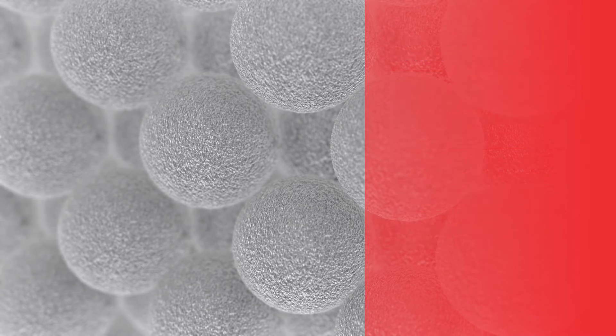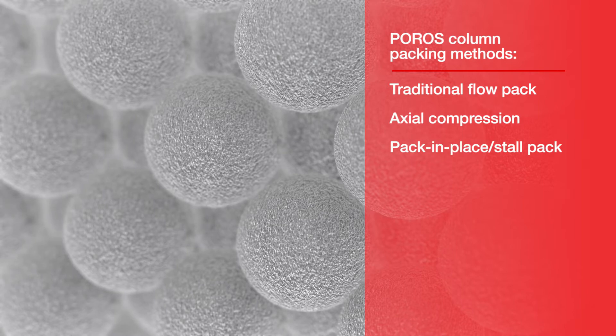POROS chromatography resins are mechanically rigid and incompressible and can be packed effectively in both low pressure glass columns and high pressure stainless steel columns. The lack of wall support with increasing column diameter has minimal impact because the beads support themselves, allowing for flexible column packing approaches. Columns can be packed with traditional flow pack, axial compression, or pack in place stall pack packing methods.